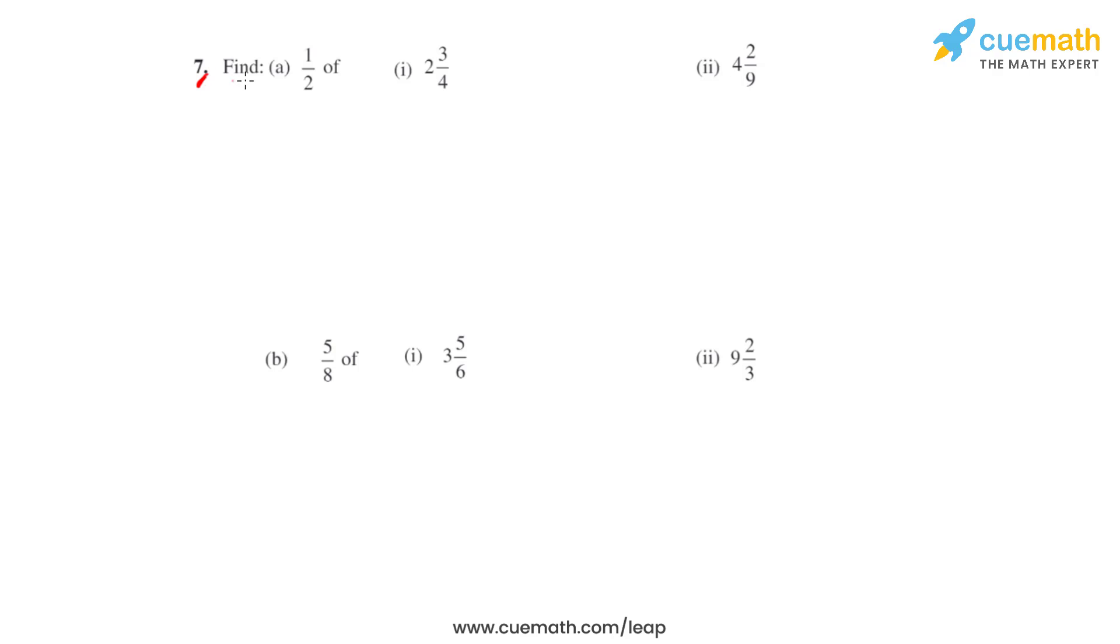Question number 7 says find half of 2 3/4. So we'll write 1/2 of 2 3/4. If we convert this mixed fraction into an improper fraction, we'll get it as 11 over 4.